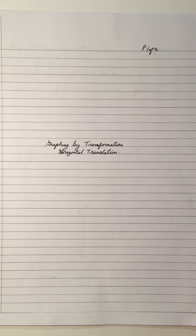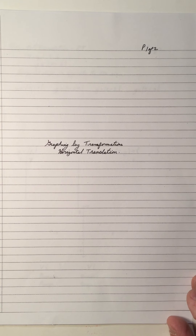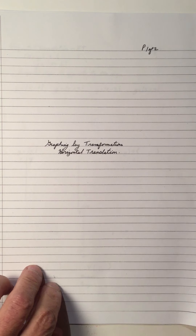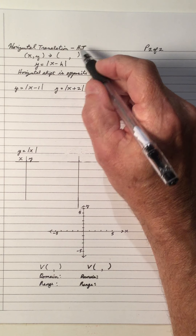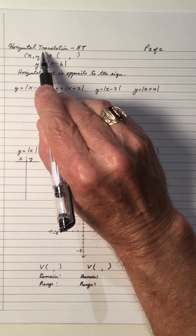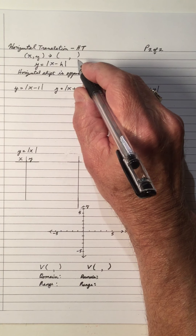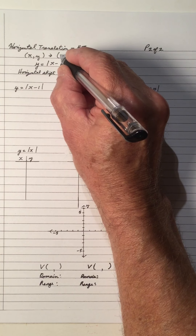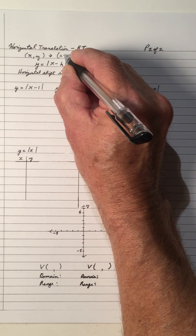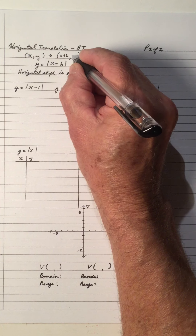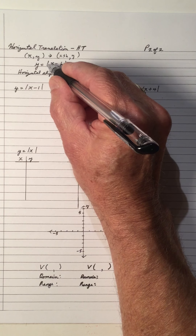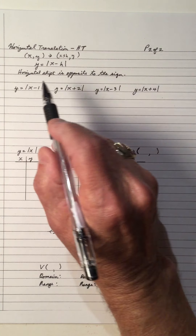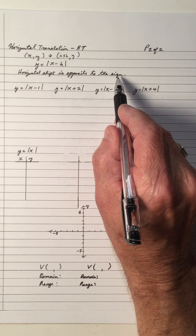Welcome to my video on graphing by transformations on the absolute value. This video is on horizontal translation, denoted by HT — H for horizontal, T for translation. The mapping rule for horizontal translation affects the X: it's X plus or minus H, not affecting the Y. So the equation is Y equals the absolute value of X minus H. The horizontal shift is opposite to the sign.